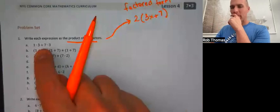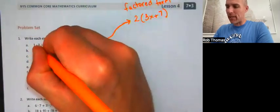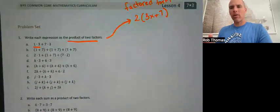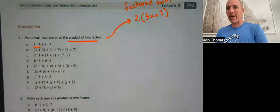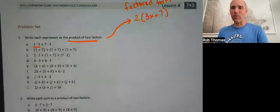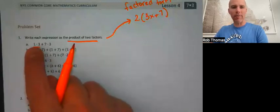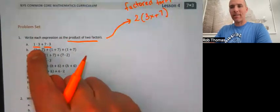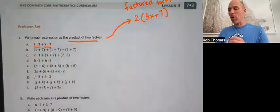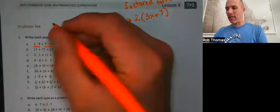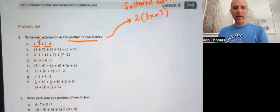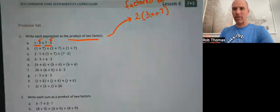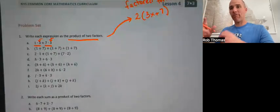Look at the first one. 1×3 is a term — just like 2x or 3x, it's a number times a number. So this is number times number plus number times number. Both 1×3 and 7×3 have a common factor of three. We can use factoring expressions to factor the three out.